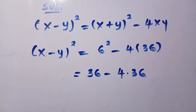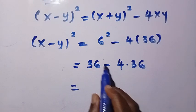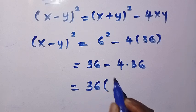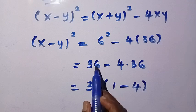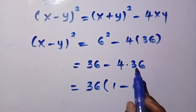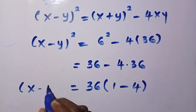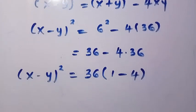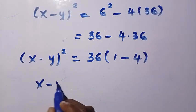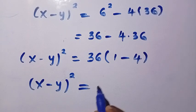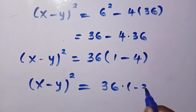So (x minus y)² equals 36 minus 4 times 36. Factoring out 36 gives us 36 times (1 minus 4), which equals 36 times minus 3. Therefore (x minus y)² equals negative 108.